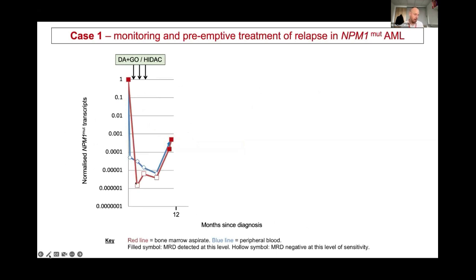This patient didn't have a transplant in first remission, but instead had sequential monitoring to detect the approximately 20 to 30 percent of patients that would relapse. Approximately 12 months from diagnosis, a sequential monitoring sample tested MRD positive. We would never take any action on a single result, so it was repeated urgently — again positive with an increase in transcript levels, fulfilling the European Leukaemia Network definition of a molecular relapse. The peripheral blood samples were also positive, confirming this patient has a molecular relapse and will certainly relapse clinically without further intervention.